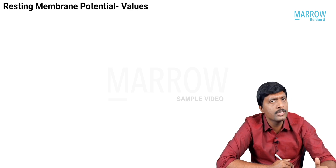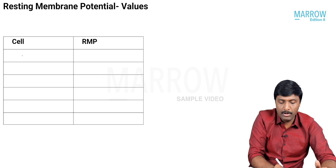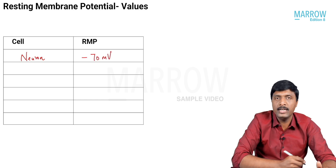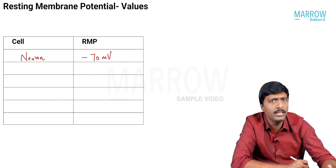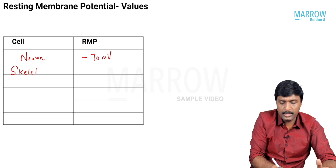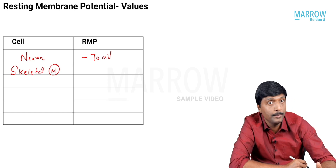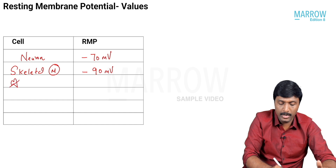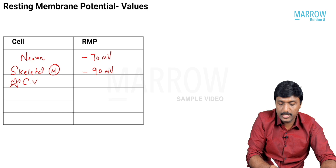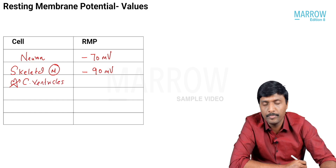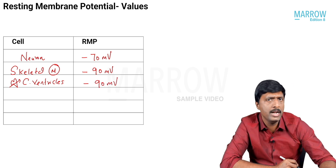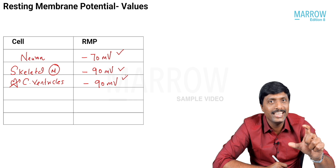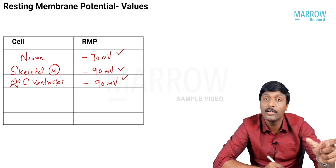Resting membrane potential values are asked many times. Remember this important table. For a neuron it is a negative value: minus 70 millivolt. The second commonest location they will ask about is skeletal muscle — its value is minus 90 millivolt. Third, particularly in the heart — cardiac ventricles — the same value, minus 90 millivolt. So: neuron is minus 70 millivolt; skeletal muscle and cardiac ventricles are minus 90 millivolt.